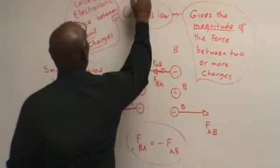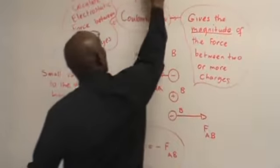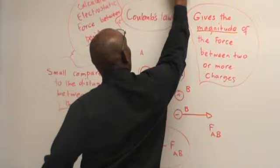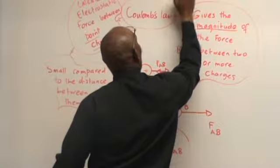If you pay attention, Coulomb's law in equation form: F is equal to K, Q1, Q2, over R squared.